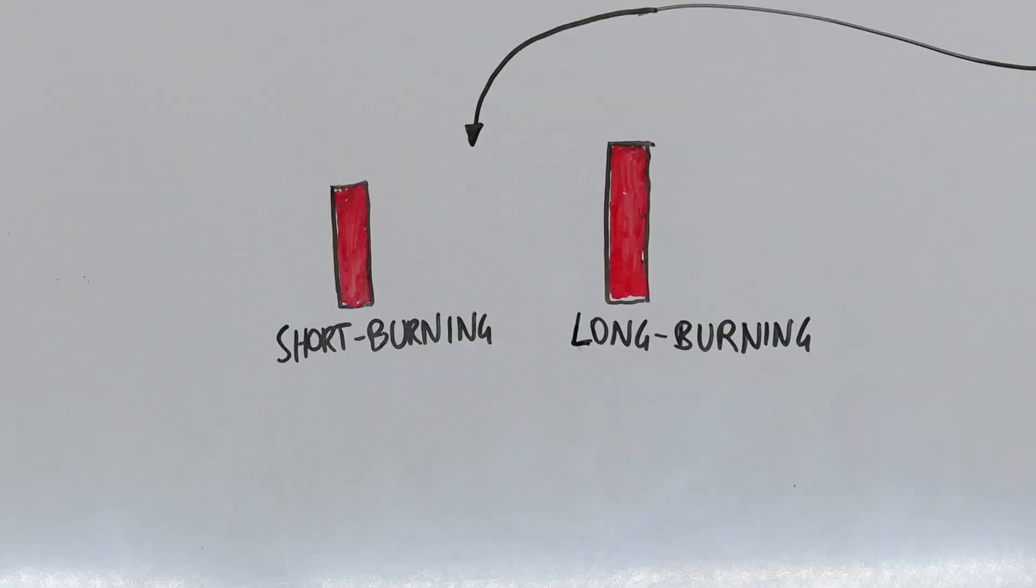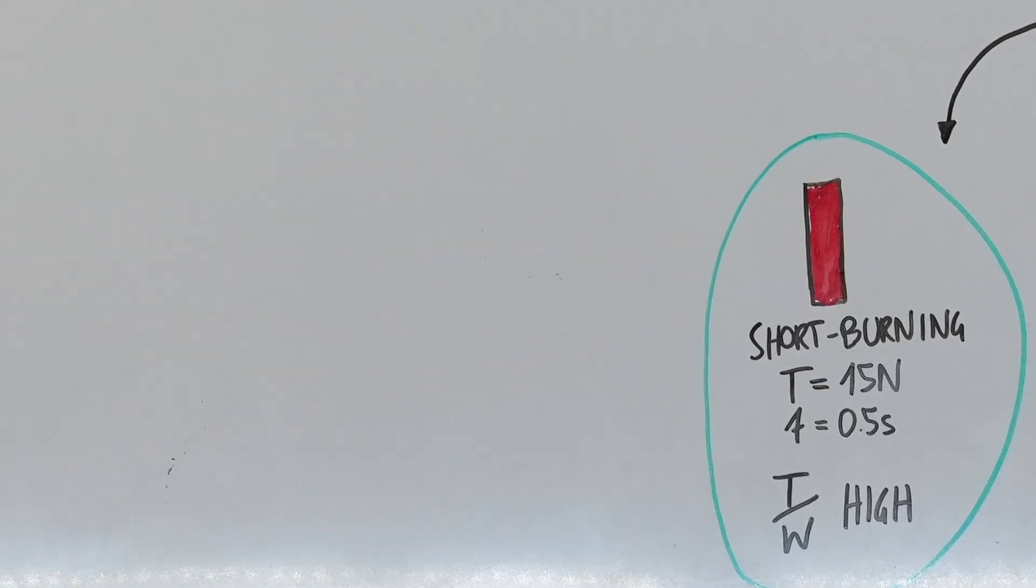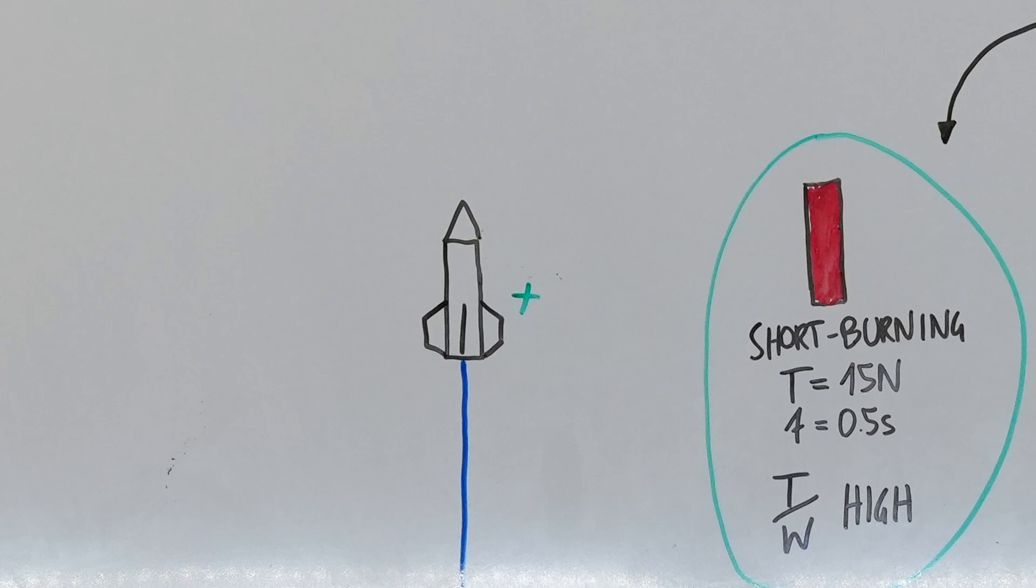Model rocket enthusiasts usually choose short-burning rocket engines over longer-burning ones to achieve a very high thrust-to-weight ratio. If this ratio is high enough, the rocket flies perfectly stable by only adding fins to the rocket's rear. This effect is called passive stabilization.